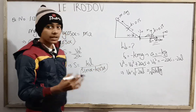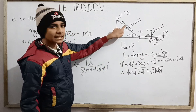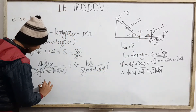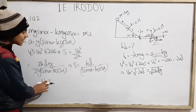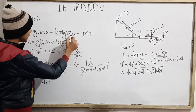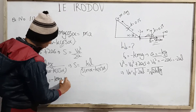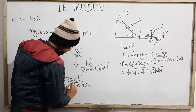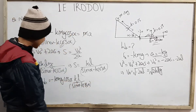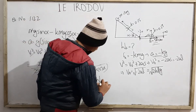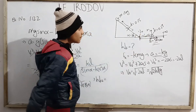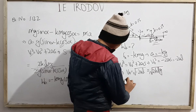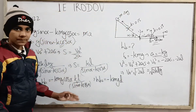Now we need to calculate the work done by friction over the entire course of motion. Work done by friction on the incline: friction force is minus k mg cosα, times distance kl/(sinα - k cosα), giving work W₁ = -k²mgl cosα / (sinα - k cosα). Work done by friction on the horizontal plane: friction force is minus kmg, times displacement l, giving W₂ = -kmgl. We will add both works separately.